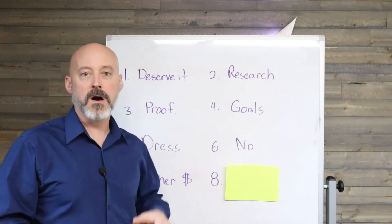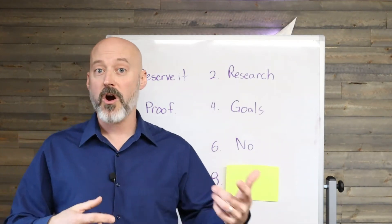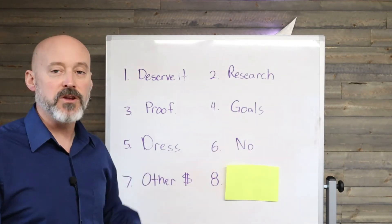Number seven is other money. Now it's not just money or cash that you could be asking for. There might be other perks, maybe a car, a vehicle allowance, or other things that you could actually ask for or get if they say no as well.